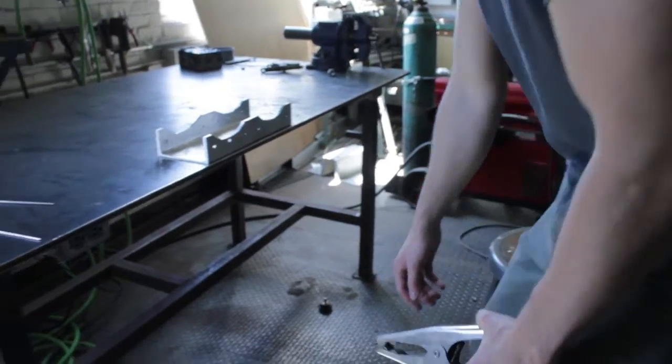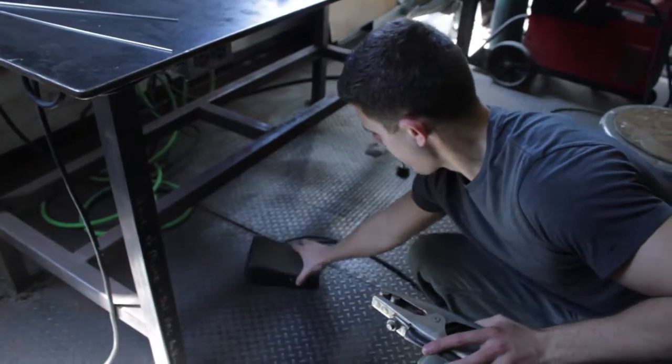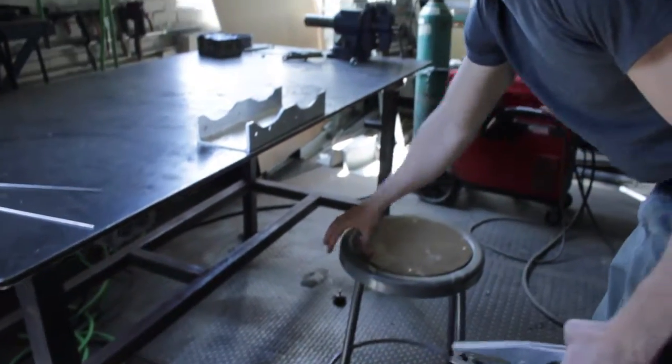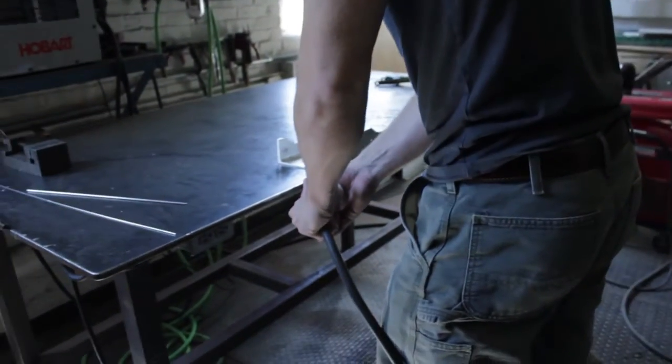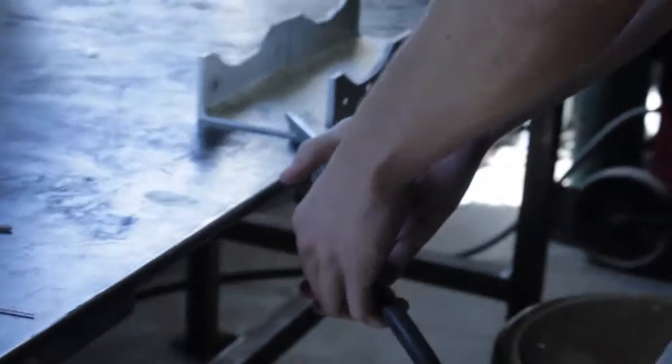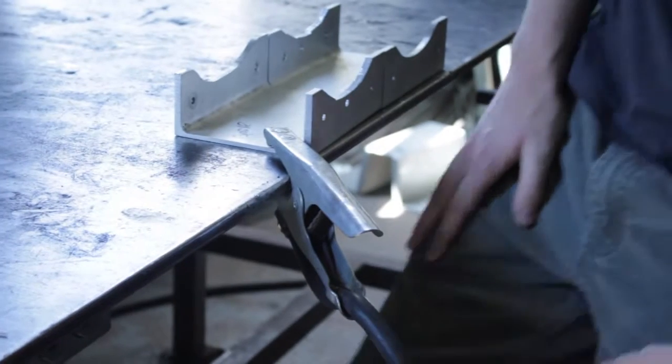Grab a stool and place the pedal on the floor next to you so that you are in a comfortable position. The throttle controls your amperage like the gas pedal on a car. Make sure your ground is clamped to the part you are welding and that the part is secure on the bench.